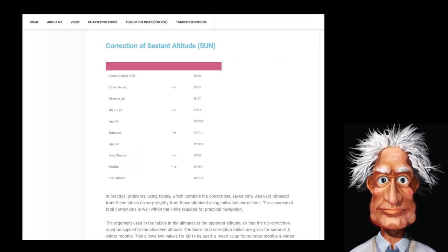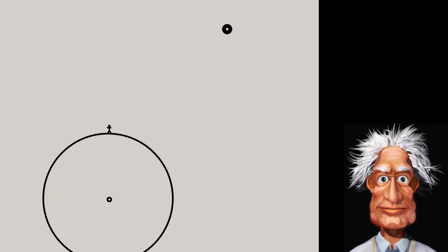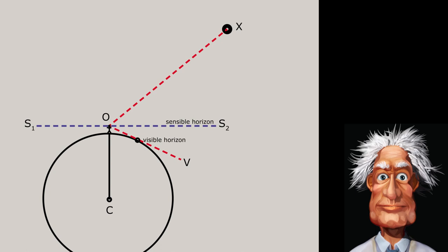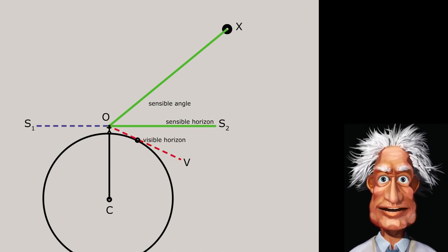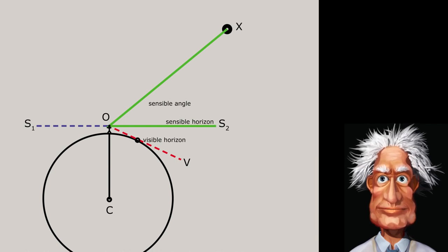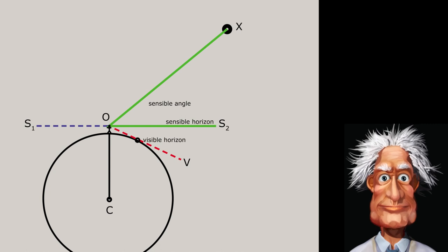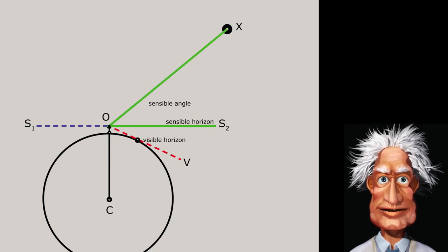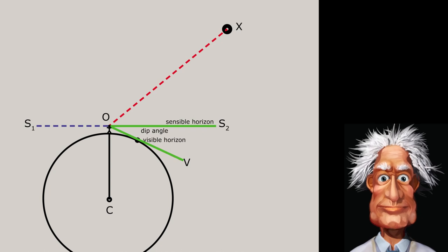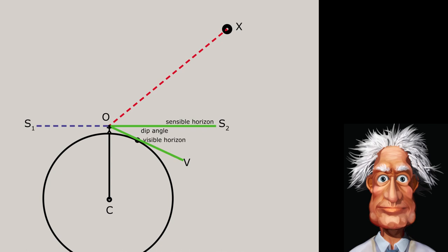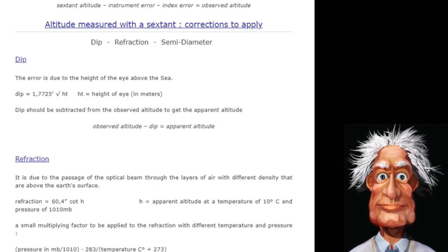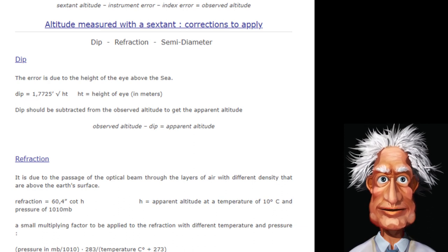In short, it goes like this. We have an observer with his eyes at O. He measures with the sextant the angle between the star X, his eyes O, and the visible horizon at C, V. However, what he initially wanted was the sensible angle between the star X, his eye O, and what is called the sensible horizon V, that is a circle whose plane is perpendicular to the local vertical for the observer and passes through the observer's eye. Therefore, he needs to know the dip angle S2 O, V.